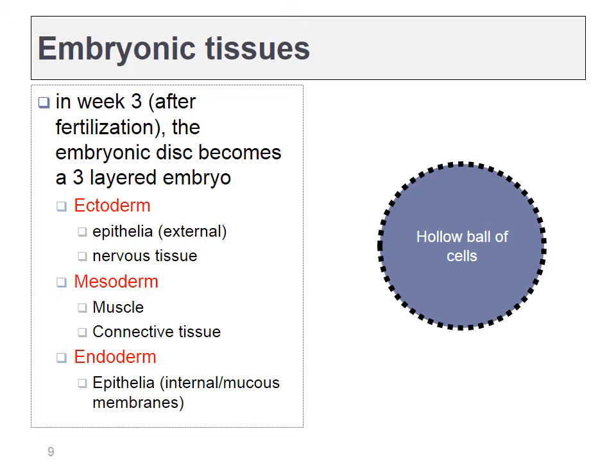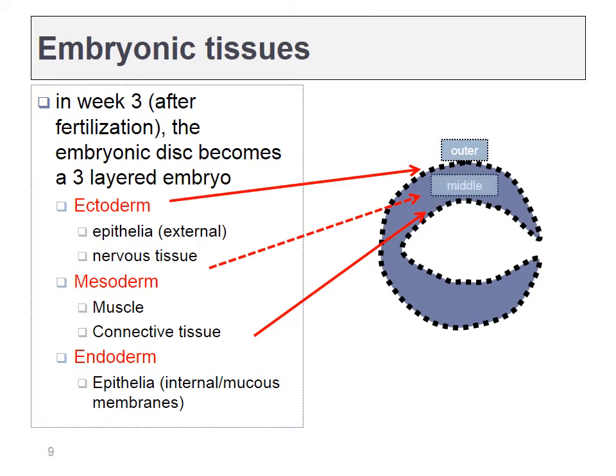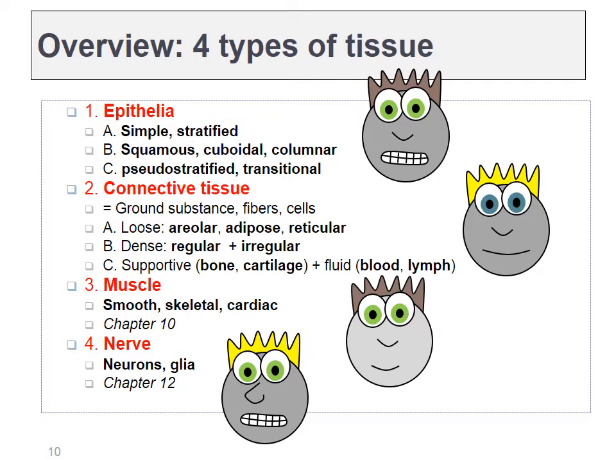The best way to classify tissues would have been to look at a family tree — in an organism, we'd call these cell lineages. Initially all cells are exactly the same, but some migrate inward, giving us inner and outer layers, and then some migrate between them, giving us three basic cell types: ectoderm, mesoderm, and endoderm. All tissue types are derived from these three families. Instead, we break them into four families based on how they look as adult cells: epithelia, connective tissue, muscle, and nervous tissue.